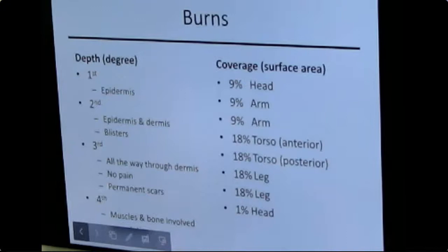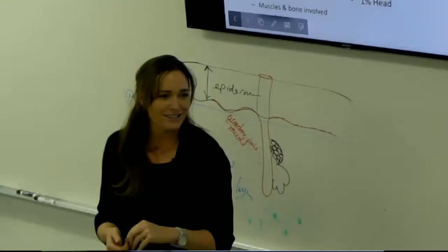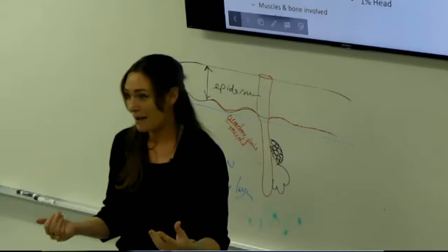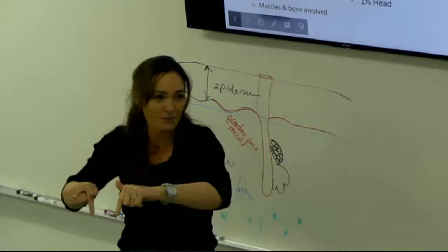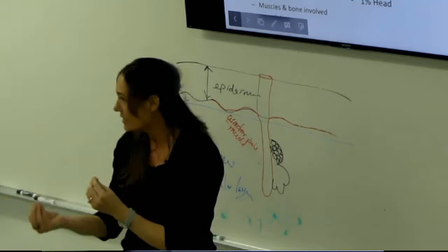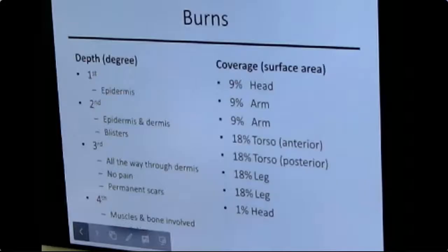A first-degree burn, like a light sunburn, causes the epidermis to begin separating from the papillary dermis, forming early blisters. A third-degree burn reaches all the way to or through the dermis and is actually not painful at the burn site itself — because nerve endings have been destroyed. Pain is felt at the edges where nerves remain intact. Third-degree burns result in permanent scarring because repair from such depth is severely compromised.